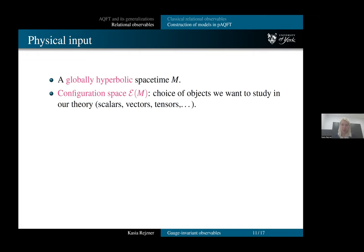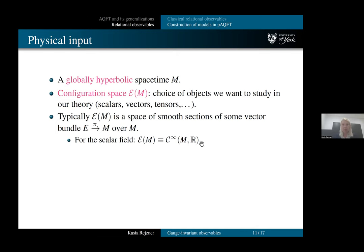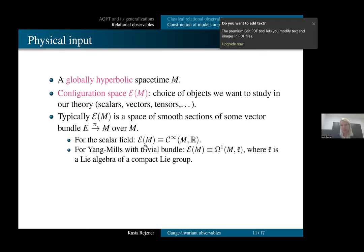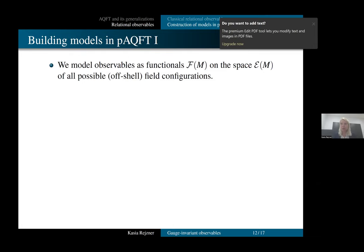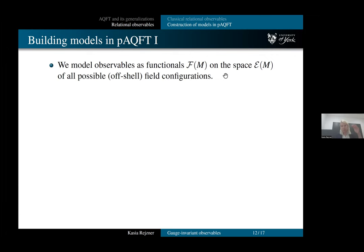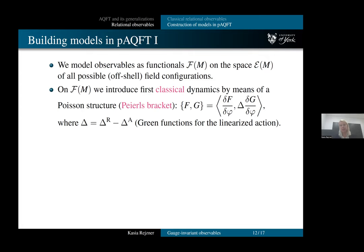So just to give you a very brief sketch of how this magic of quantization happens. So we start with a spacetime. We start with a configuration space. So scalars, vectors, tensors, whatever you want to study. And then, here are the examples. So scalar fields, smooth functions on your spacetime; for Yang-Mills, we have one forms valued in a Lie algebra; and metric perturbations for effective quantum gravity. Dynamics is introduced using a version of Lagrangian formalism. And observables are considered as functionals on the configuration space.